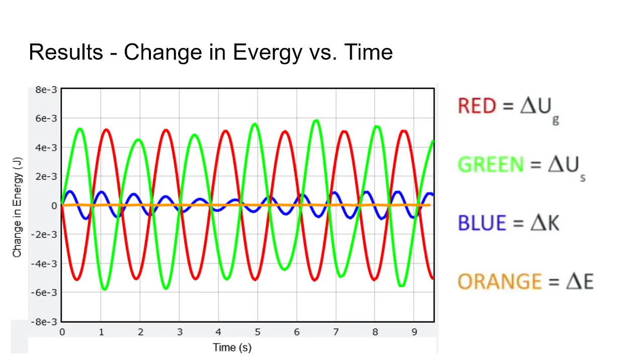So let's take a closer look at the first graph, which is the change in energy versus time. Both the red and green, which are the change in energy of force of gravity and force of spring, are oscillating between zero, and they are always on opposite sides. The blue line is the change in kinetic energy, and that too is also oscillating. What's really interesting is the orange line, which is the change in total energy, and that is always zero.